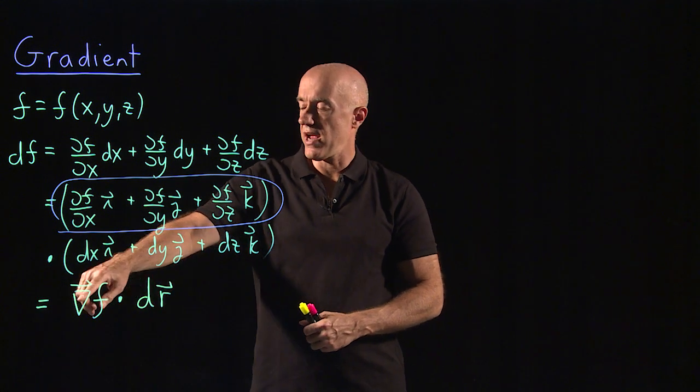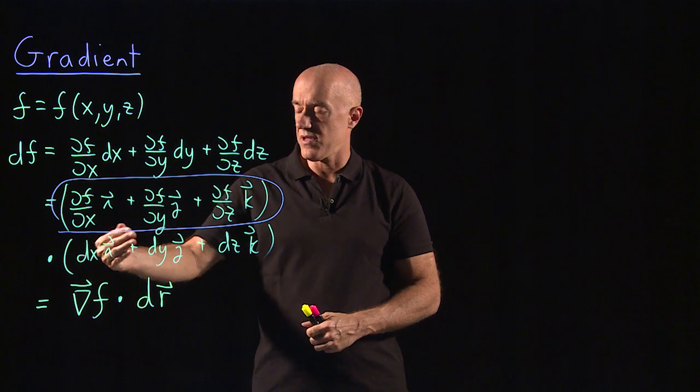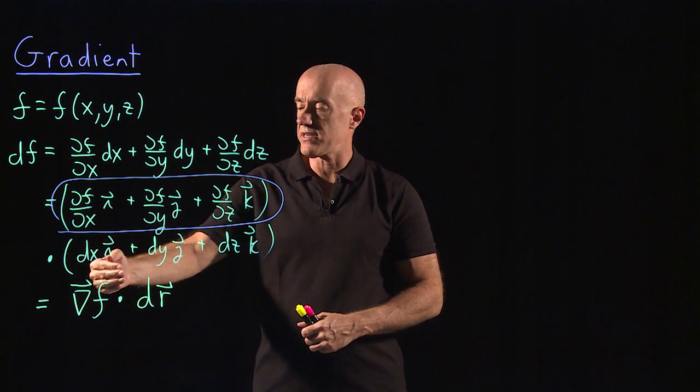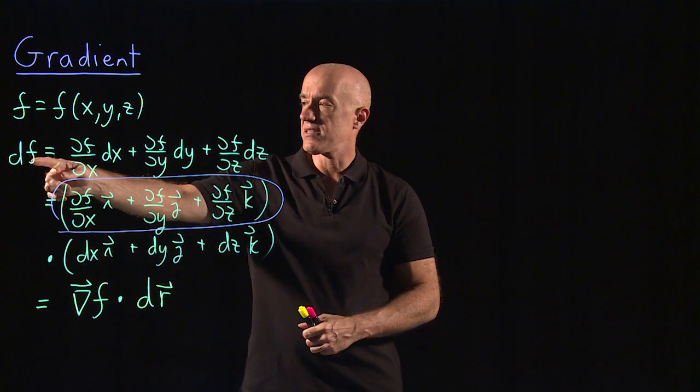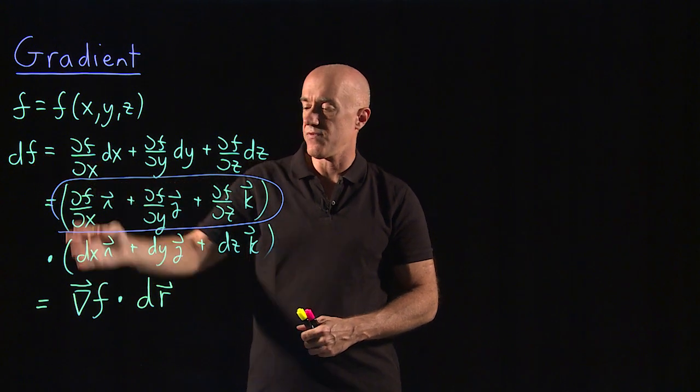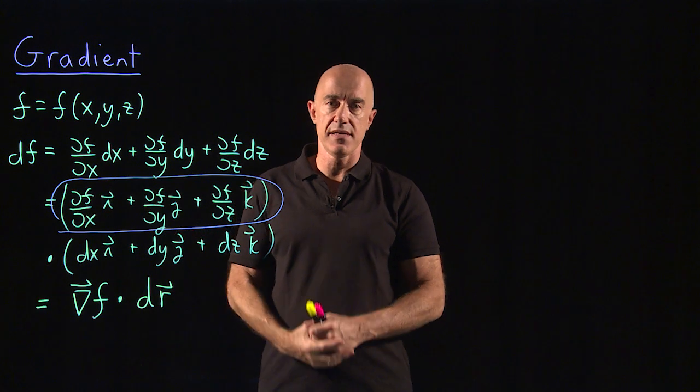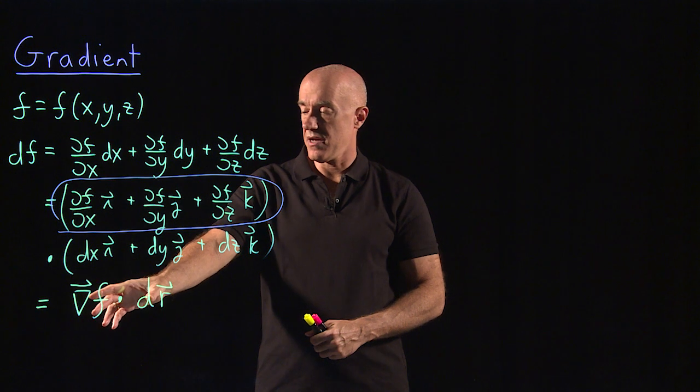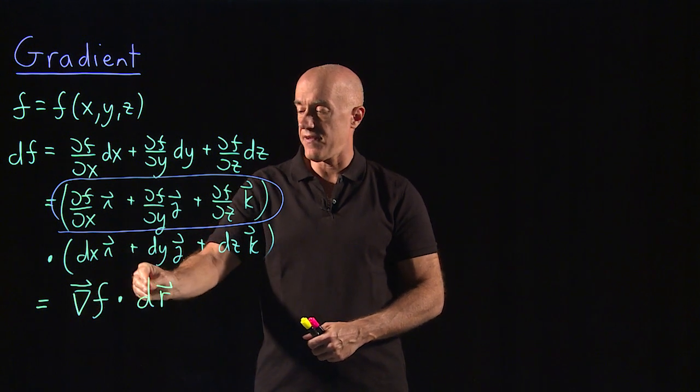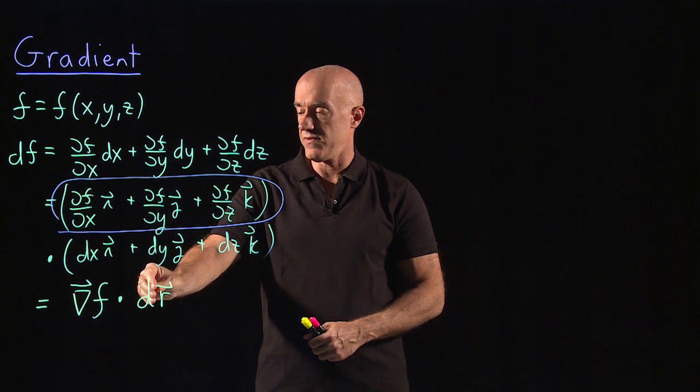So the gradient gives you the direction—this is a vector—the direction of the gradient gives you the direction of the maximum change of f when you move a little bit dr. That's because this dot product is maximum when ∇f is along the direction of dr.